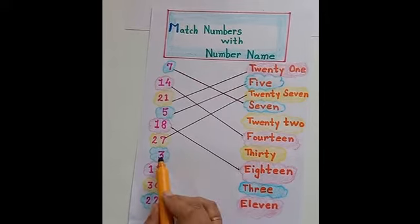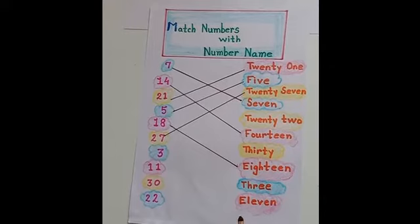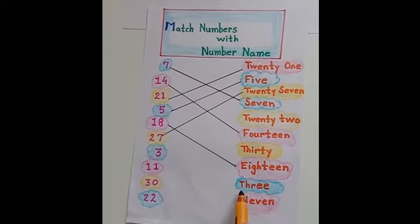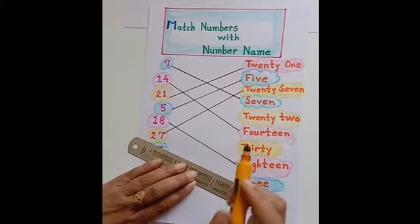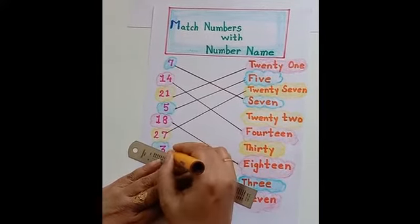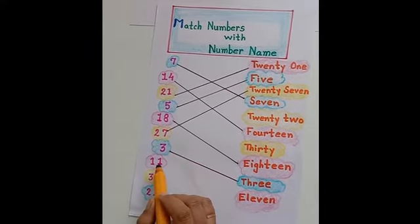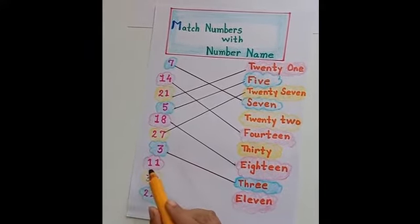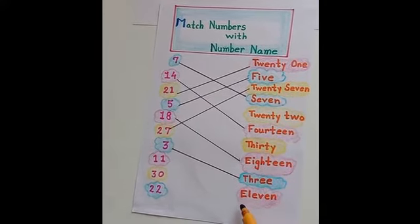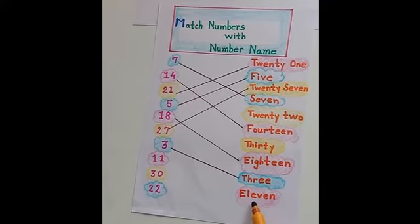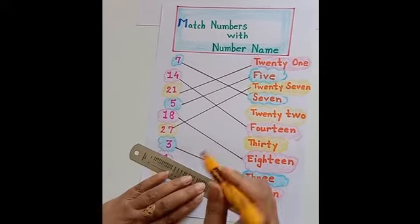Now next number is 3. Where is the number name for number 3? Here - T-H-R-E-E, 3. Let's match it. Next is number 11. Where is the number name for number 11? E-L-E-V-E-N, 11. Let's match.